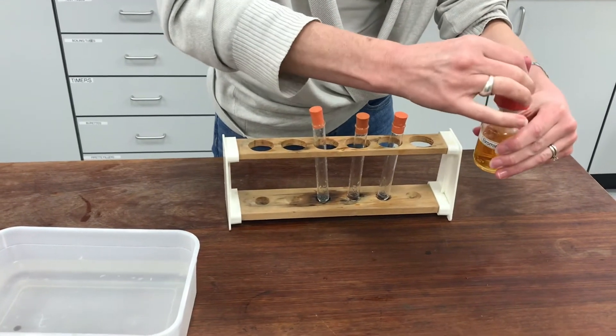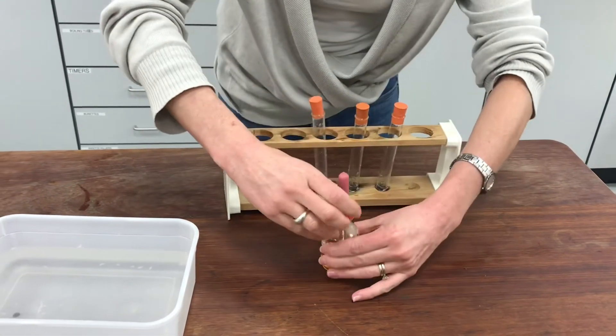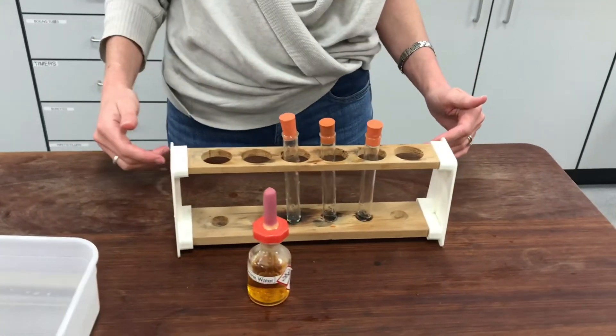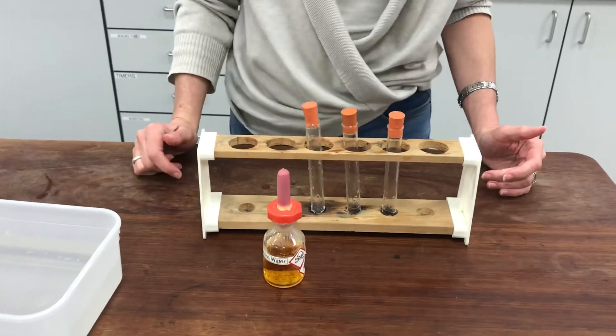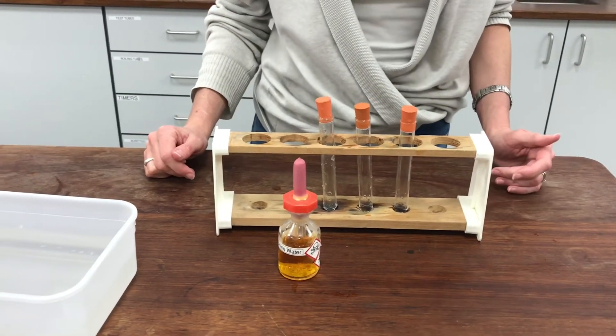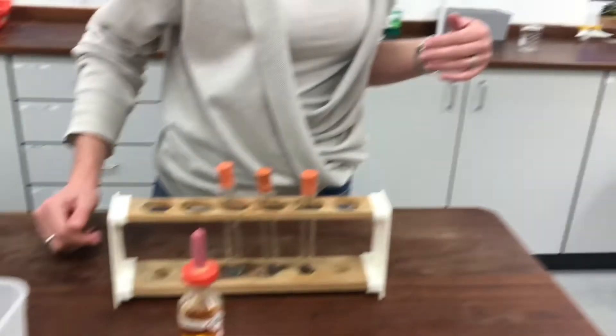Now you'll remember from experiments that we did before that when you put bromine water with alkanes they tend not to do anything unless you've had a lot of UV light go on them. Well, it's evening now and I'm in a lab with the blinds down and it's dark outside there's no UV light around.